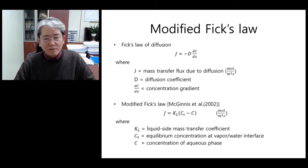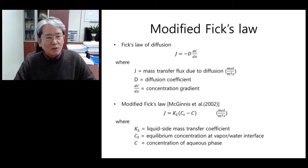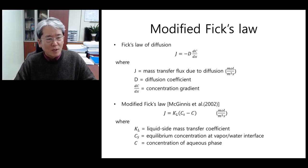Basically, Fick's Law of Diffusion deals with mass transfer when there exists a concentration gradient. The law states that the mass flux due to diffusion is proportional to the concentration gradient, and the proportionality constant is termed the diffusion coefficient. McGuinness and Little introduced a modified expression of Fick's Law to be used in the case of diffusion through bubbles.